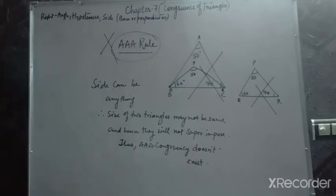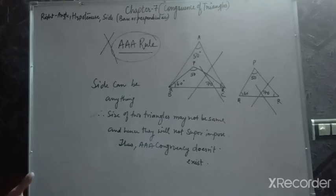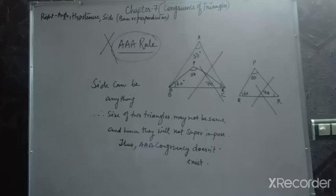Are we clear? By this, your congruency chapter is over here. I hope you enjoyed the chapter. In the next chapter, we will start with comparing quantities — we will study ratio and proportion, percentage, profit and loss, selling price, cost price, and simple interest. Take care. Bye-bye.